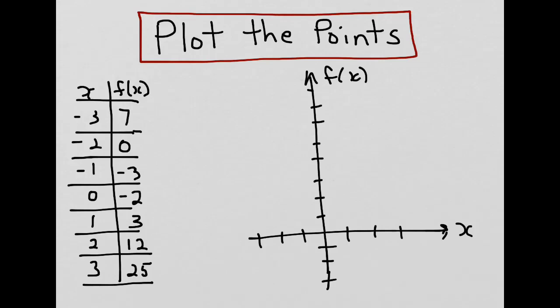And then we plot our points. Our first point is negative 3, 7. So, we go 3 to the left. 1, 2, 3, 4, 5, 6, 7 up. And draw our point.